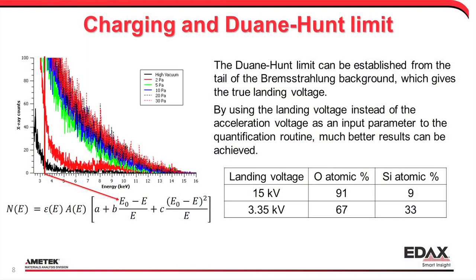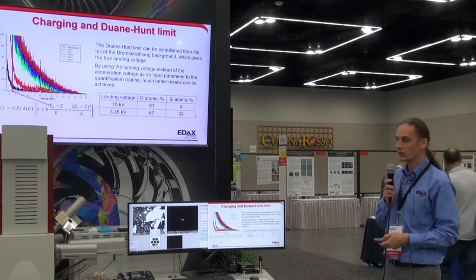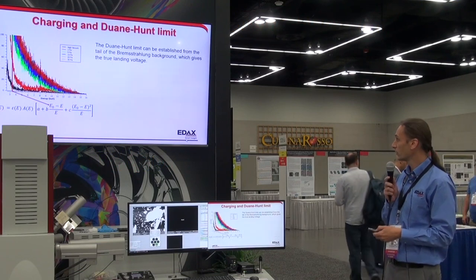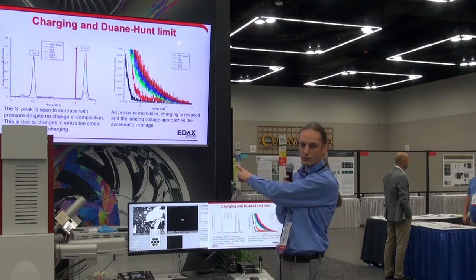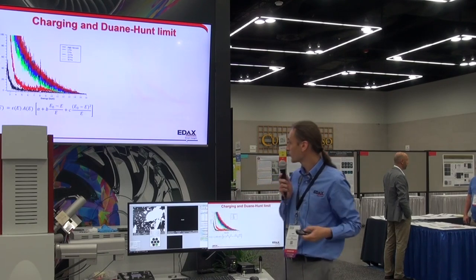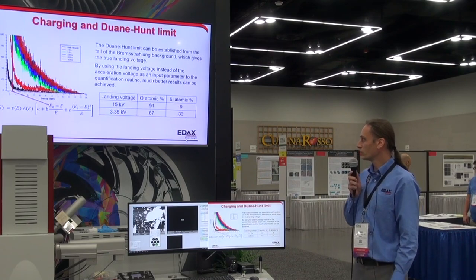We're supposed to have 15 kilovolts coming down — that's my actuation voltage. But if I click the quant button on this high-vacuum spectrum telling the software we have 15 kilovolts of landing voltage, it's going to be garbage: it will tell me I have 91 atomic percent oxygen and 9 atomic percent silicon, because the oxygen peak is significantly higher than the silicon peak.